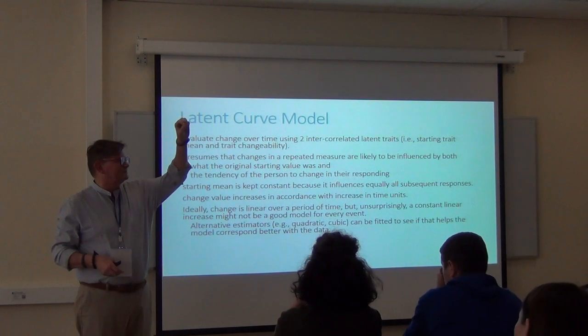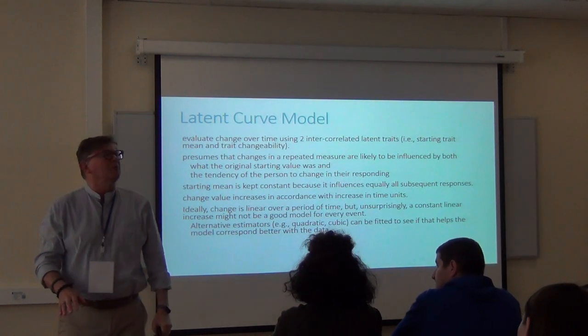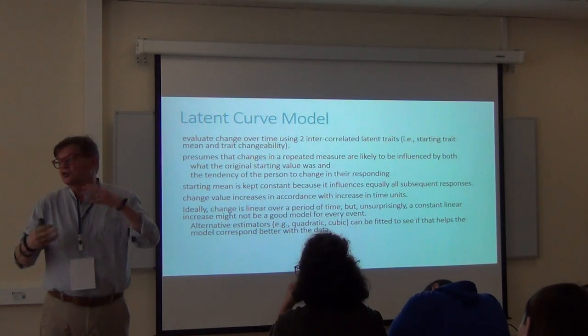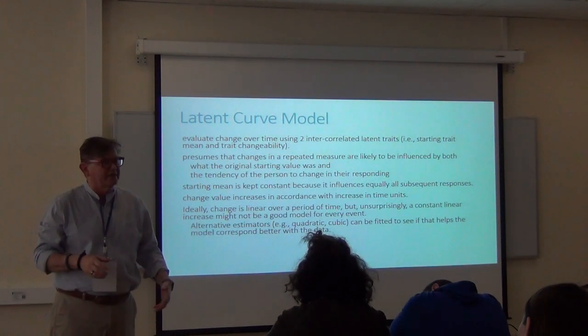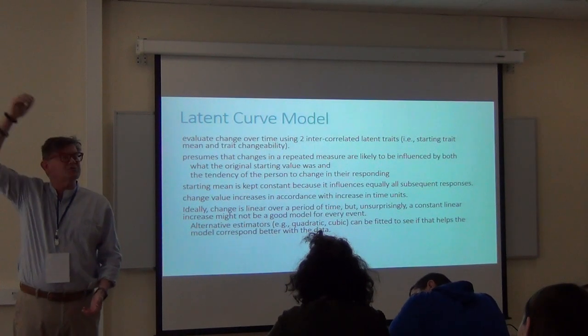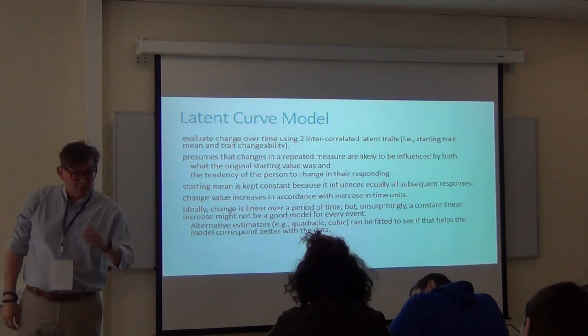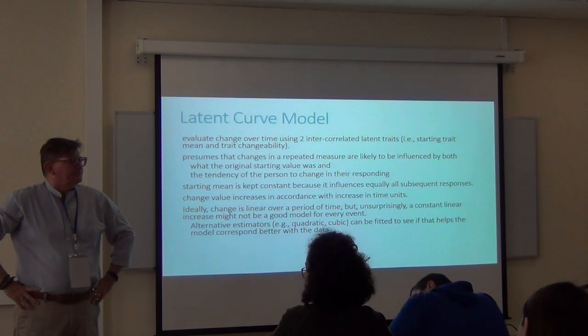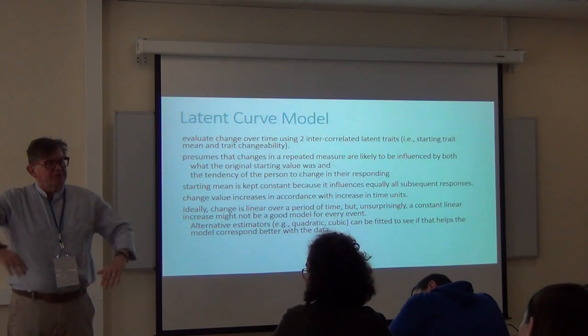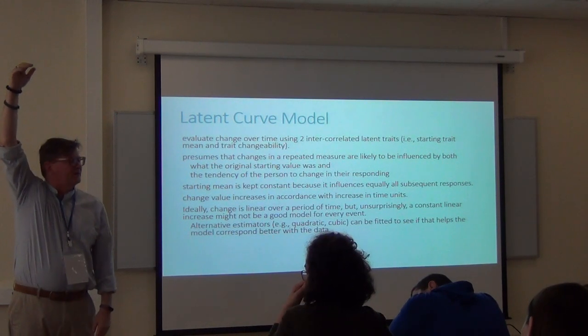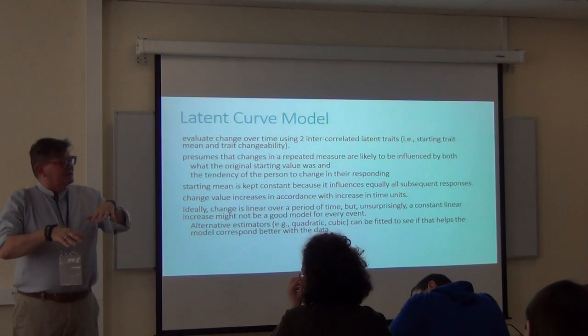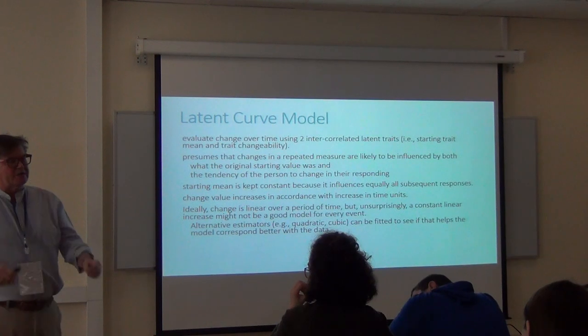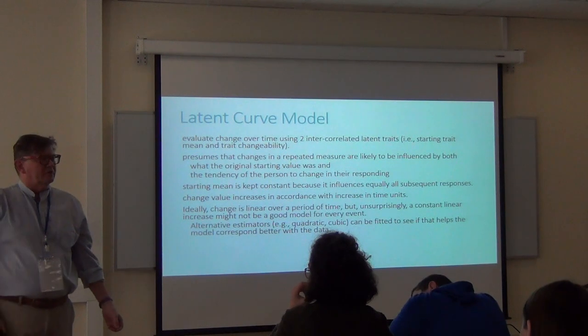If you start near the top, it's hard to go up, it's easier to go down. If you start near the bottom, it's almost impossible to get any worse, but you can go up. This ceiling and floor effect limit how much change you have. When you want to do a repeated measure study, you have to make sure that the ceiling is really high so people aren't bumping into it, and the floor is really low so people don't bump into that.